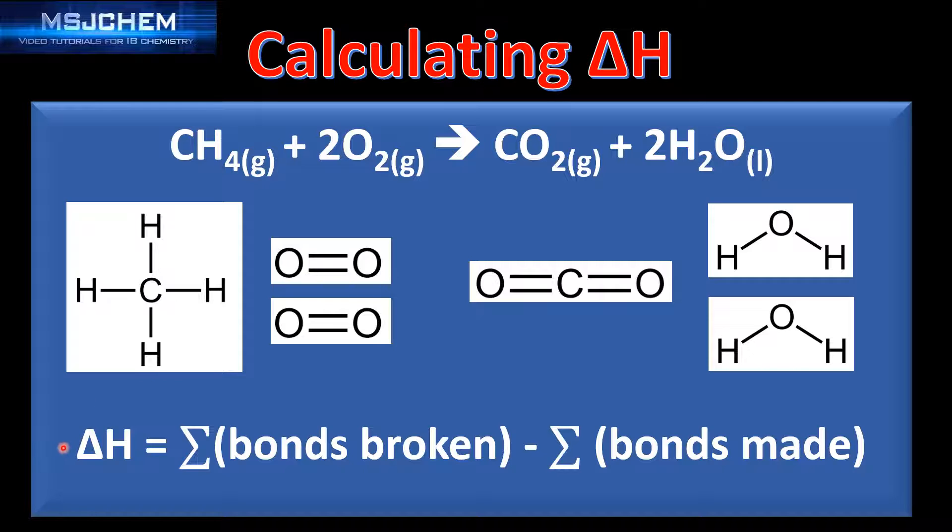We'll use the equation at the bottom - the change in enthalpy equals the sum of the bonds broken in the reactants minus the sum of the bonds made in the products.